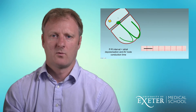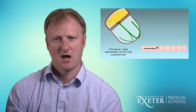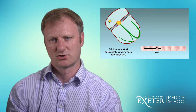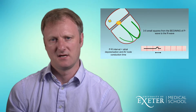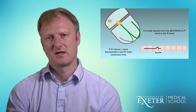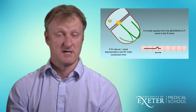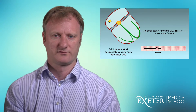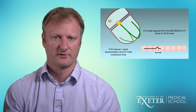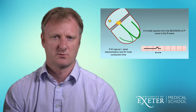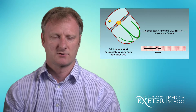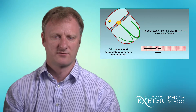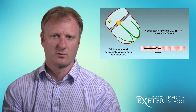When we think about the PR Interval, what we're really talking about is the function of the AV node. The AV node is a highly specialised piece of kit and it will conduct the impulse through the ventricles in a normal patient between 120 and 200 milliseconds, which is three to five small squares.